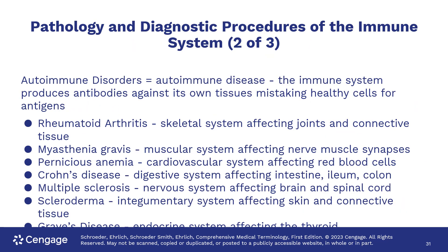Another type of immune disorder is an autoimmune disorder, where the body sees its own tissue as foreign. Examples are rheumatoid arthritis, Crohn's disease, and Graves' disease, among others.